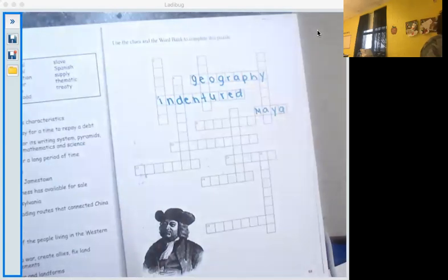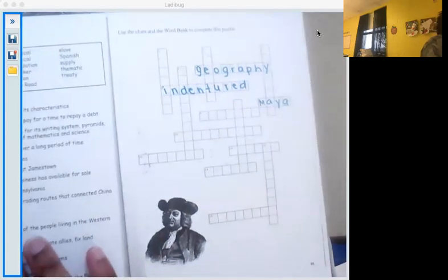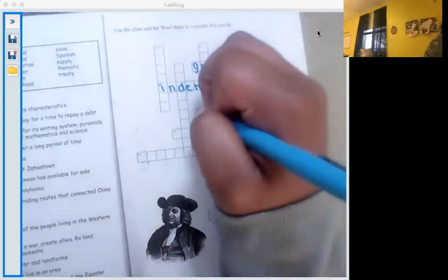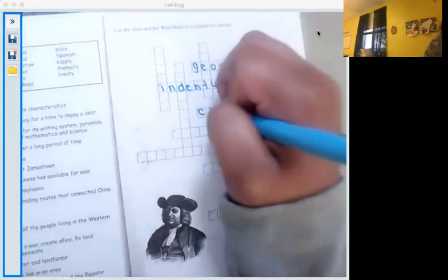Okay. Number nine. The weather conditions of an area over a long period of time. Remember, we talked about the difference between temperature and climate. And climate is going to be what we see over a long period of time.